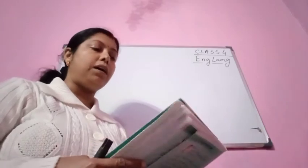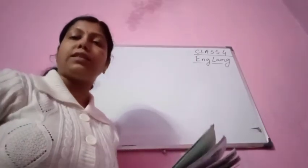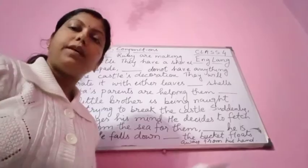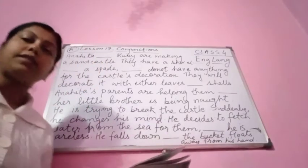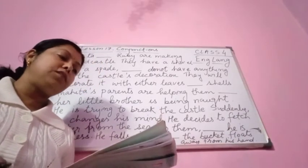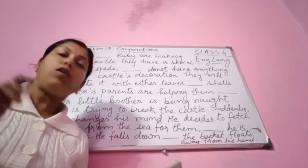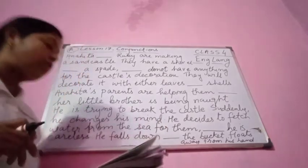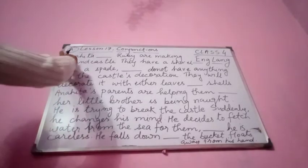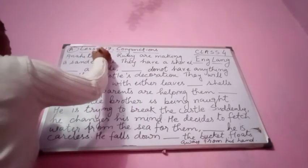Now complete the passage using 'and', 'but', or 'or' - we are going to do Exercise A. Anahita and Ruby are making a sand castle - here we use 'and'.